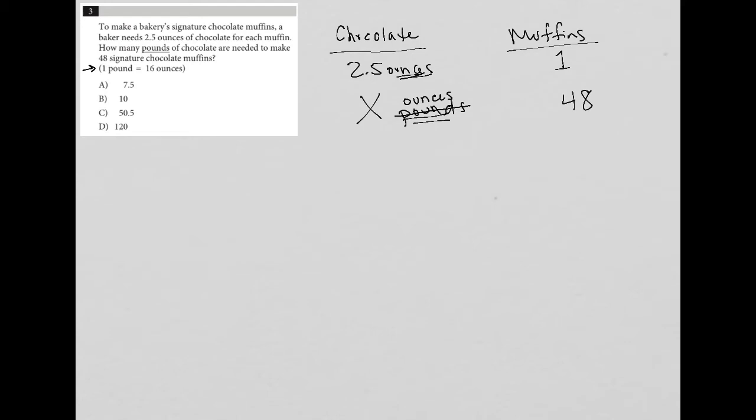So this is a relationship where I know the connection between 2.5 ounces and one muffin. I don't know how many ounces I need for 48 muffins. So what I can do with this is create a proportion. The ratio of chocolate to muffins is 2.5 to one, and that should be equal to the ratio of chocolate to muffins for the next relationship, which would be X to 48.